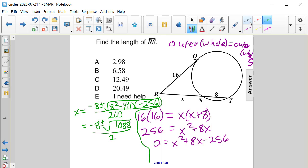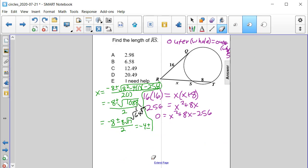And now the factors of 1088 are 64 and 17, so we can square root both of those. So the square root of 1088 rationalizes to be 8 square root of 17 over 2. And then we can divide both of these terms by 2 and get negative 4 plus or minus 4 square root of 17.